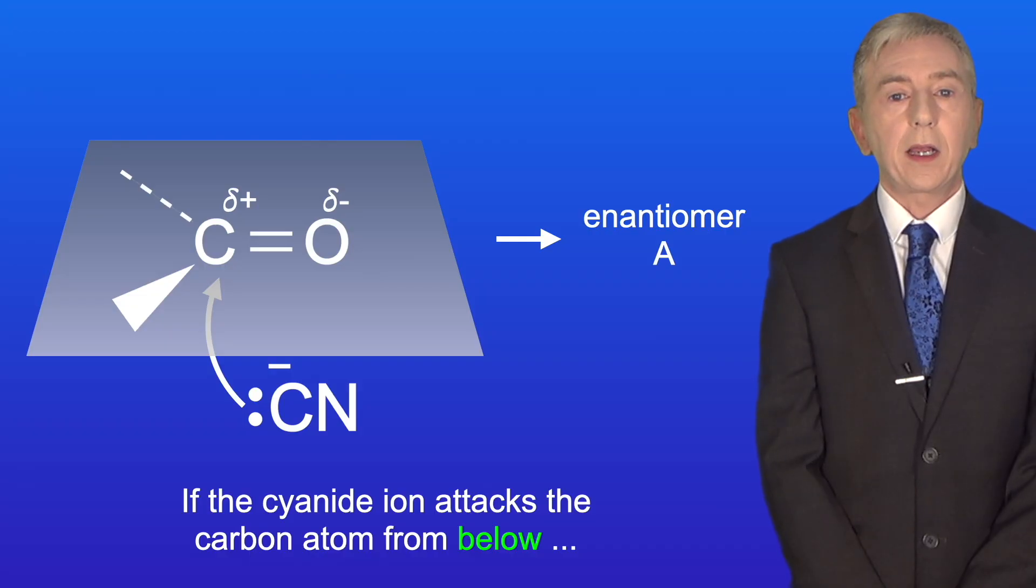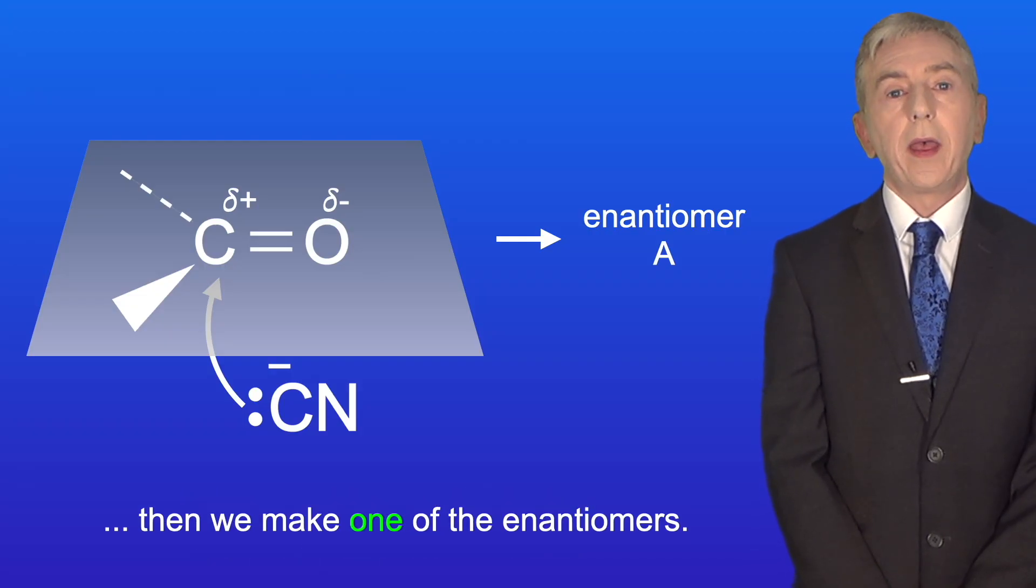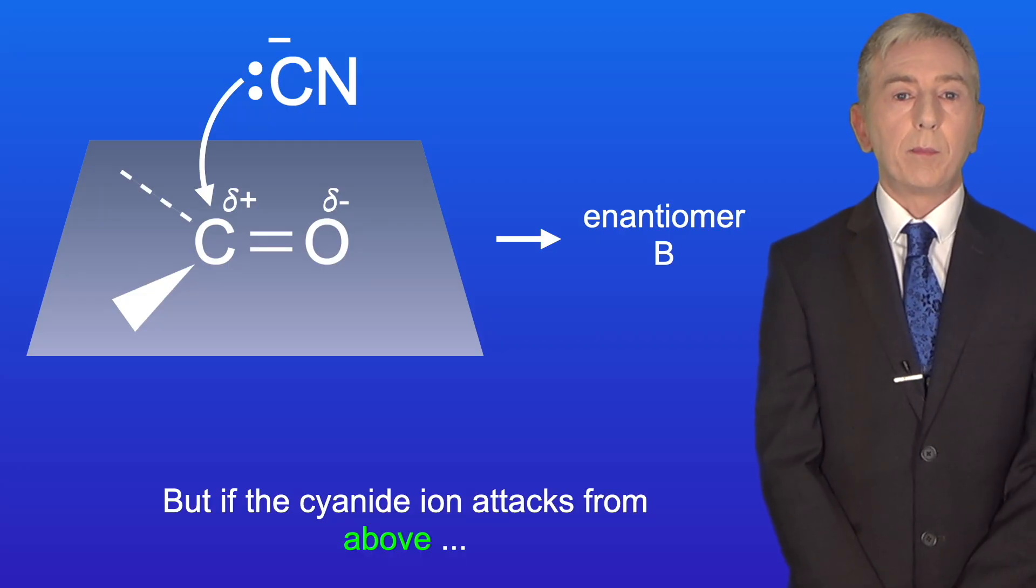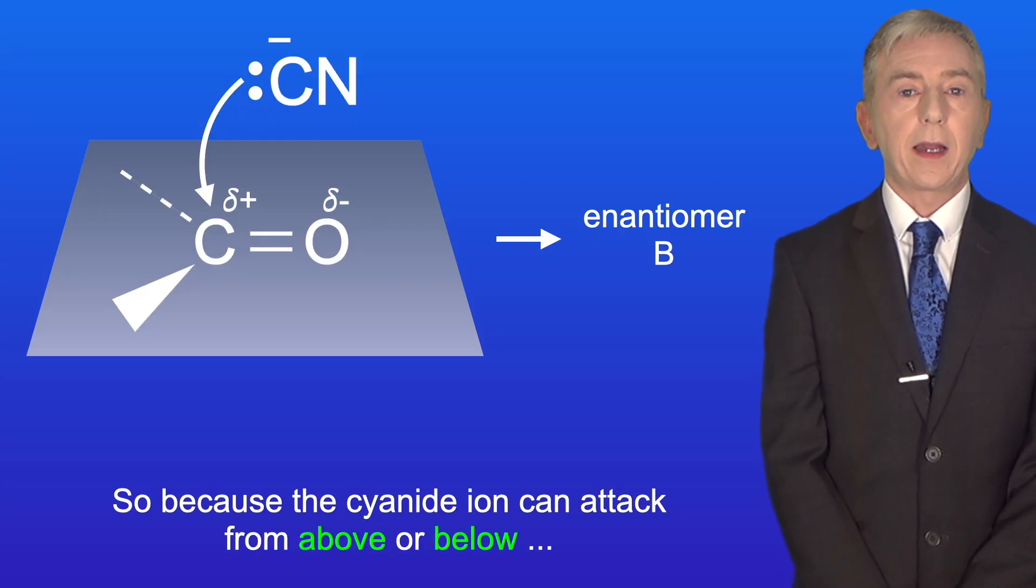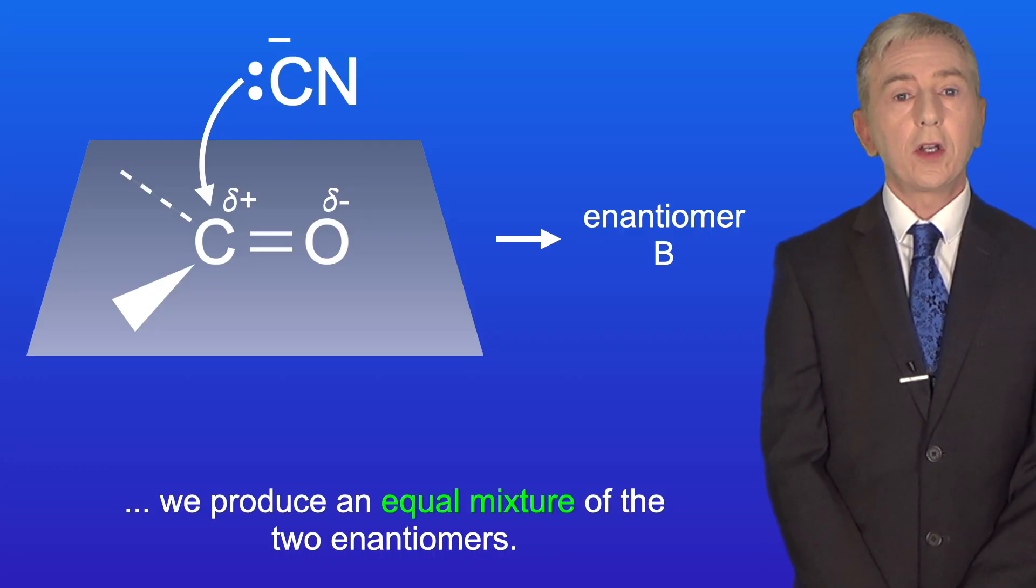Now if the cyanide ion attacks the carbon atom from below, then we make one of the enantiomers. But if the cyanide ion attacks from above, then we make the other enantiomer. So because the cyanide ion can attack from above or below, we produce an equal mixture of the two enantiomers.